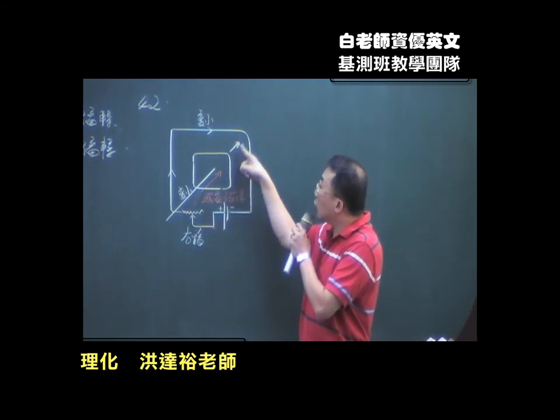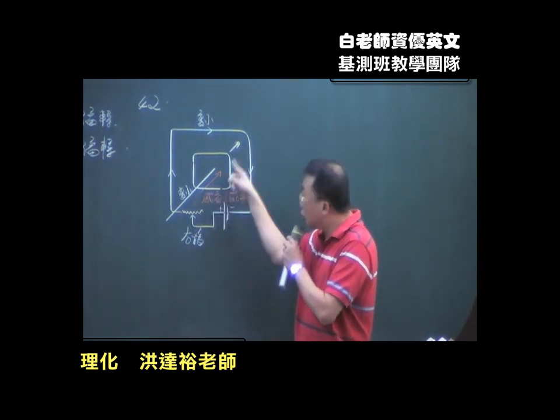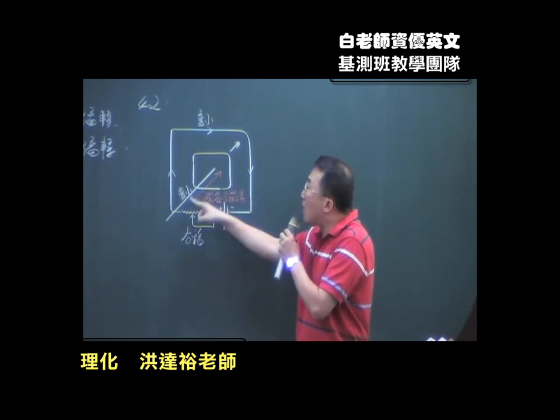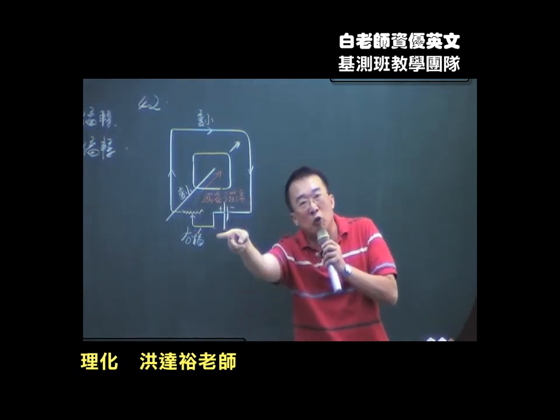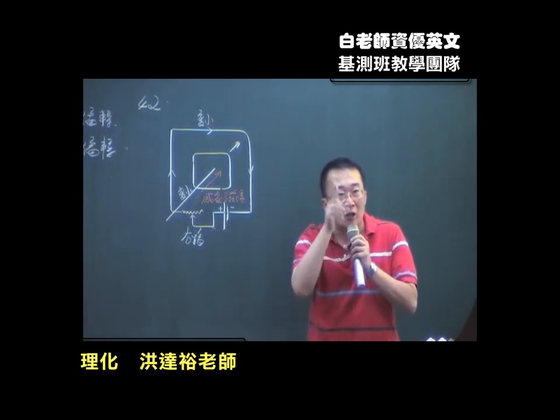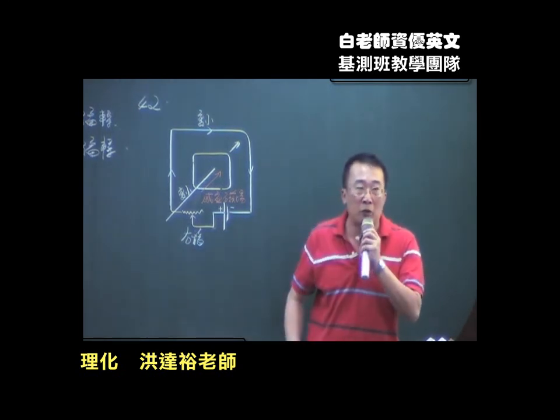你知道感应磁场为什么跟白磁场同方向？因为你的白磁场变小了，我就变成一个那种方向。万一你的白磁场变大，我的感应磁场就跟你喊方向。你变小我跟你同向，你变大我跟你反向。这个是不是叫做冷市的抵抗原则，对不对？